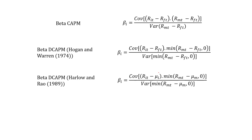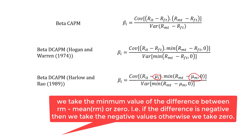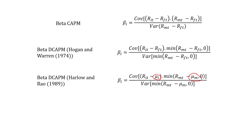Then we have Harlow and Rao. They removed the risk-free rate, and instead use the average of the stock return and the average of the market return. The rest of the equation is similar to Hogan and Warren. What it says is: if the market return is less than the average market return — that is, if the market return is negative — then we include it; otherwise it should be zero. So positive variations are excluded.